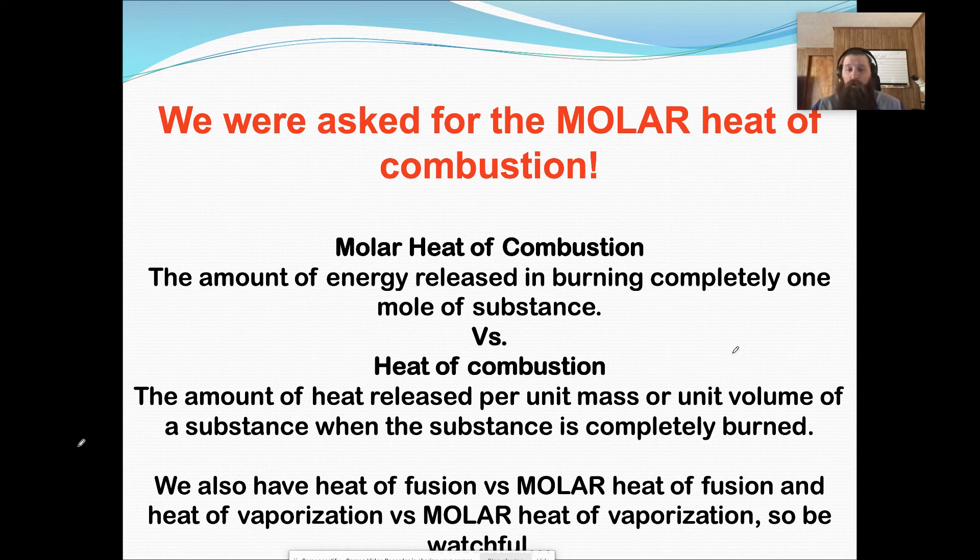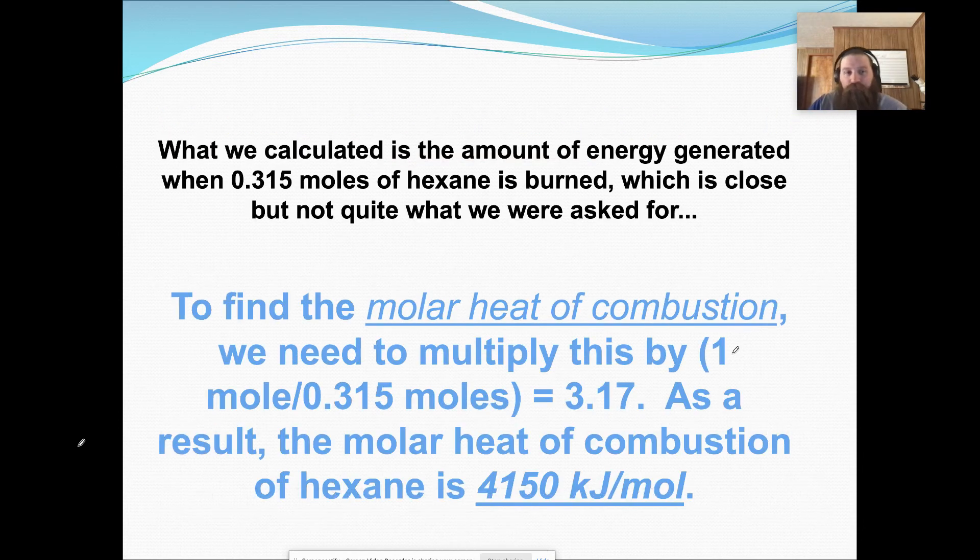And this can be molar heat of fusion. You can have molar heat of vaporization. You can have any of those regular heats, we can put molar in front of them. So we got 0.315 moles. We need to convert that over to one mole. So we're going to multiply by one mole over 0.315 moles. We're going to convert, and we get 3.17 there. And so when we multiply it out, we get 4150 kilojoules per mole.